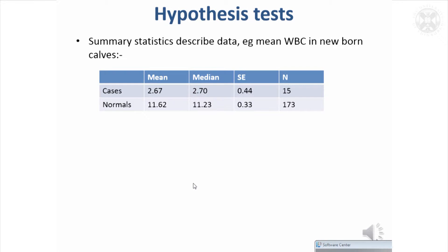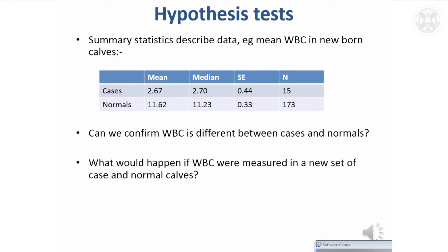Hypothesis tests are the things you want to carry out to prove results statistically. If you were at the session last week, you may remember we looked at a dataset where measurements were taken on newborn calves — 15 cases with a particular serious disease and 173 normal calves. Here I've summarised a white blood cell count, and you can see the cases have much lower white blood cell count than the normal calves.